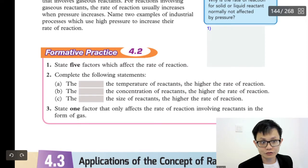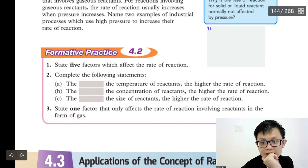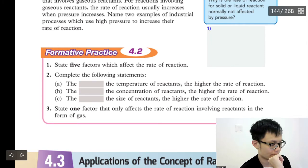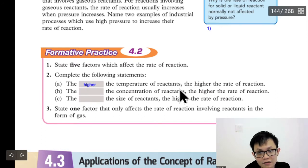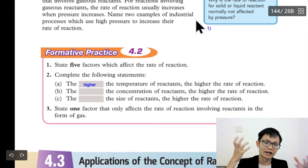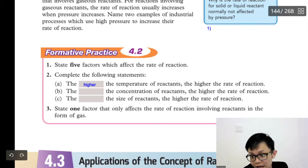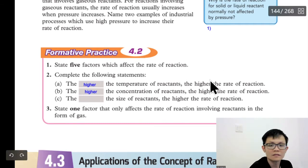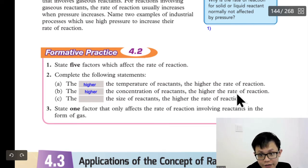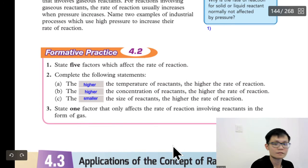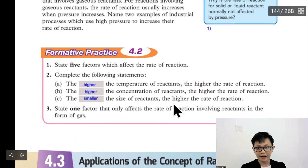Now let's do this question — complete the following statements. The higher the temperature, the higher the rate of reaction. If temperature is high you cook faster; if low, you cook slower. The higher the concentration, the higher the rate of reaction. And for the size of the solid reactant — the smaller the solid reactant, the higher the rate of reaction.